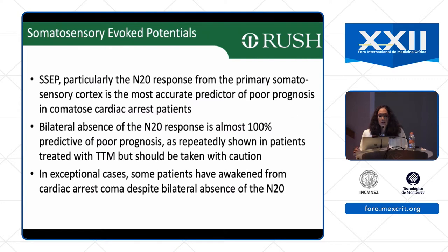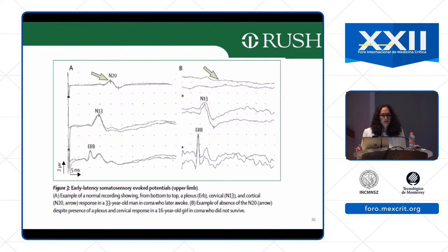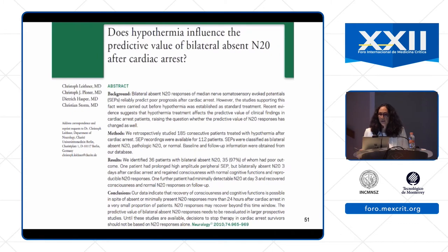Moving on to somatosensory evoked potentials — in particular, the N20 response from the primary somatosensory cortex is the most accurate predictor of poor prognosis. Bilateral absence of the N20 response is almost 100% predictive of poor prognosis. However, hypothermia does influence the predictive value of bilateral absent N20 response after cardiac arrest. Therefore, the timing of SSEP is particularly important — you want to wait at least 72 hours after rewarming before assessing with SSEP.